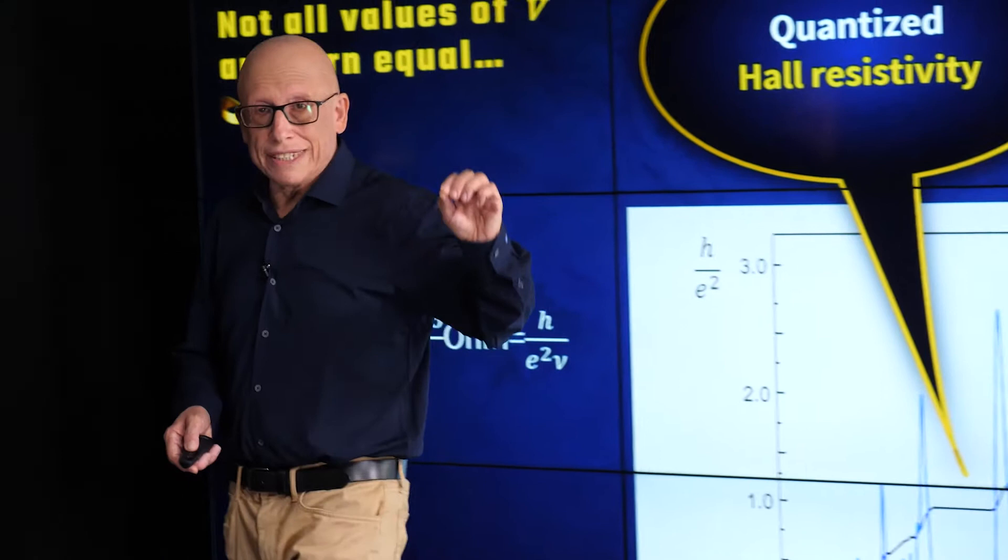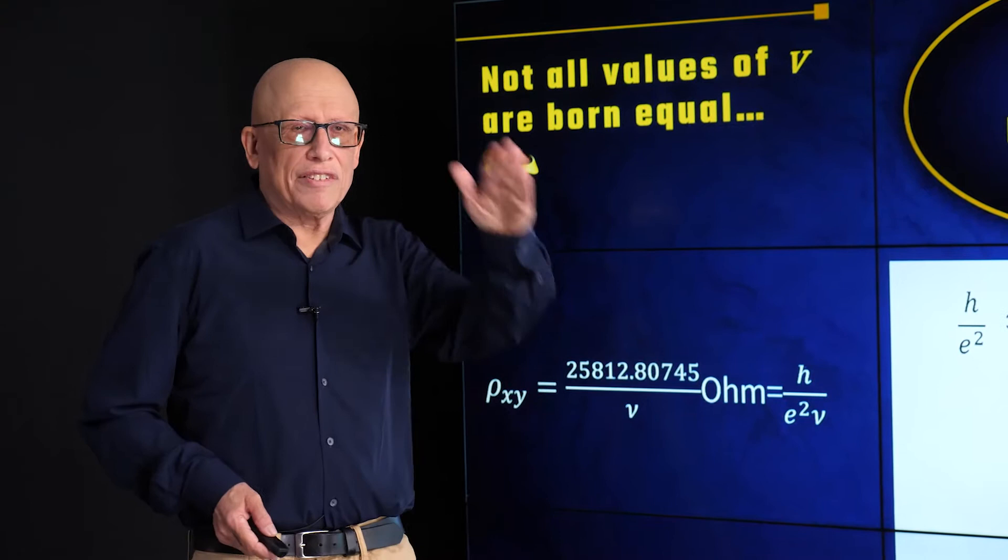What we see are these steps. You see this indicating one of them. But you see there is a step here, a step there, and there is a whole line of steps. Those steps are the quantum Hall effect.